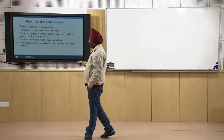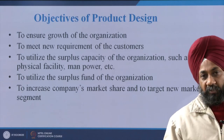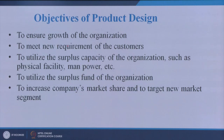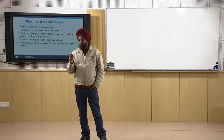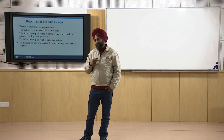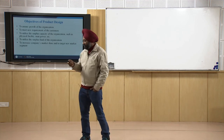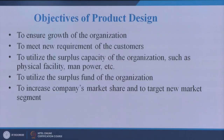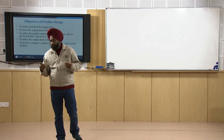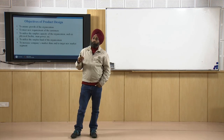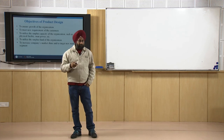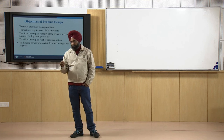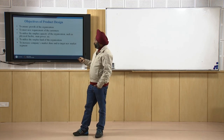Now let us look at the objectives of product design - why a new product design should be done, or with what objectives we should pursue it. First is to ensure the growth of the organization. As mentioned in the very first lecture, product design is done as a survival strategy or a growth strategy. Second is to meet new requirements of the customer - if the customer gives feedback that an additional feature would increase product acceptance, the company will incorporate that through the product design process.